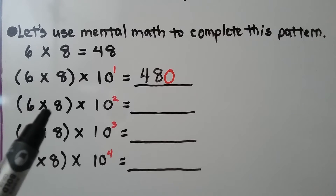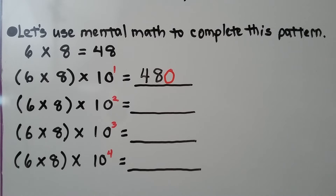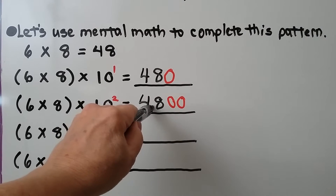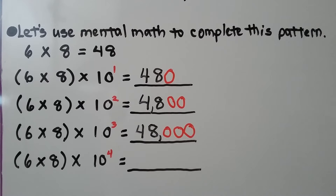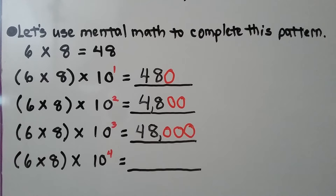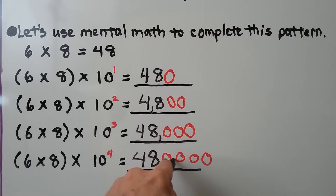6 times 8 times 10 to the second power: that's 48 with two zeros, which is 4,800. 6 times 8 times 10 to the third power: that's 48 with three zeros, which is 48,000. 6 times 8 times 10 to the fourth power: that's 48 with four zeros, which is 480,000.